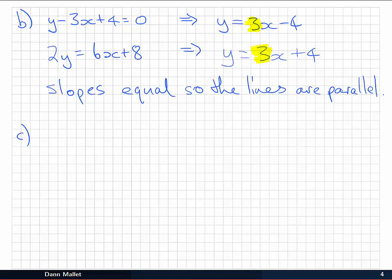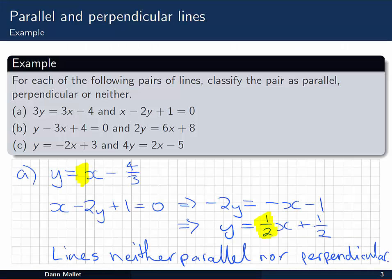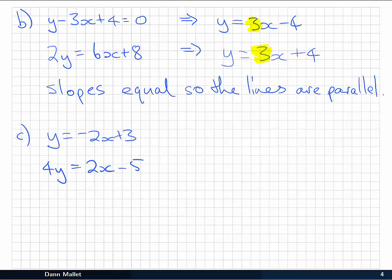Let's look at part c. Here the first line is already in the correct y equals mx plus c form. Remember, we are trying to get that form so that we can identify the slope. The second line, however, we need to divide the equation by 4 on both sides. And we get x on 2, minus 5 on 4. Here we've got a slope of minus 2 in the first line, and 1 on 2 in the second.